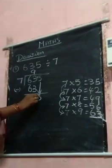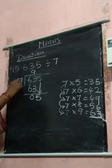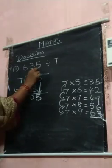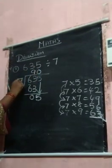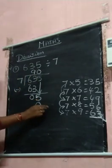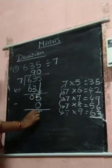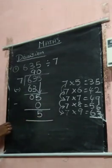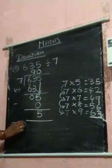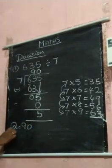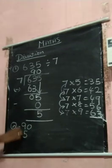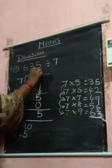You bring down this 5, but 5 is smaller than 7, so that you put 0 up. 7 0's are 0, 5 minus 0, 5. Quotient is 90, reminder is 5.